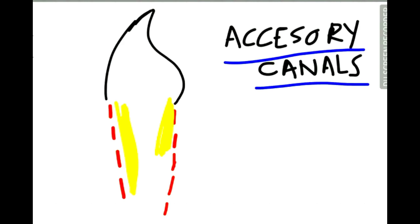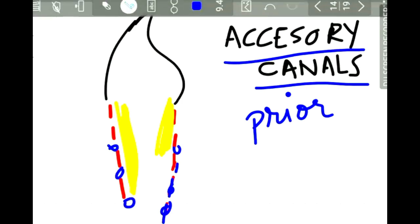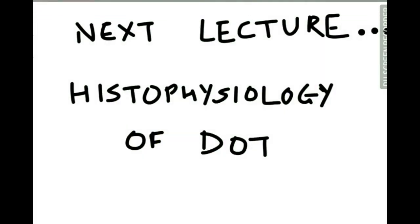The second structural abnormality is the formation of accessory canals. When the epithelial root sheath loses its continuity prior to dentine formation, accessory canals form on the root surface. These accessory canals are also found in the furcation areas of multi-rooted teeth.